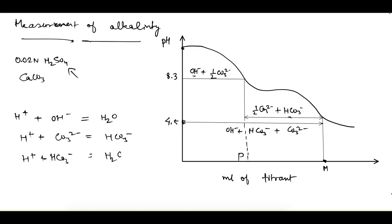Finally, the hydrogen ions react with bicarbonate ions to give carbonic acid (H₂CO₃). As we add more acid and increase the hydrogen ions available, the pH goes down. We have basic relationships between pH and which ions are available. These pH points are measured with indicators: for pH 8.3 and above we use phenolphthalein indicator, and for pH 4.5 we use methyl orange.